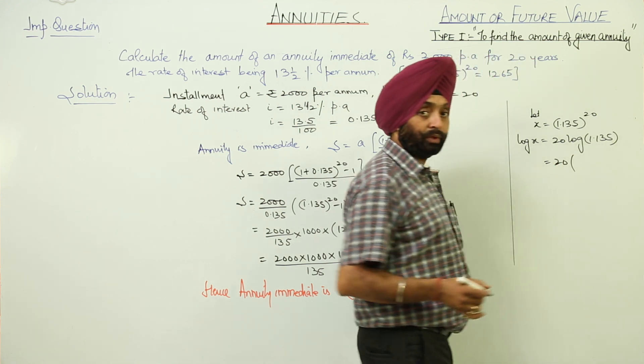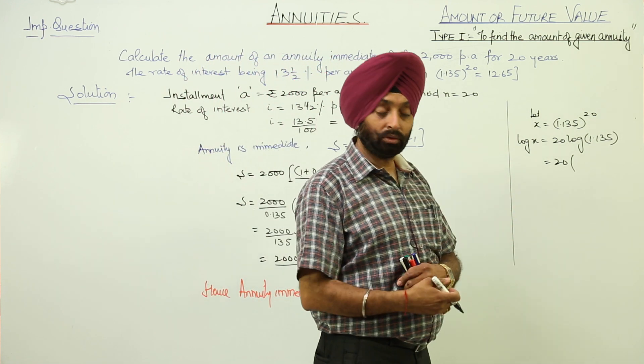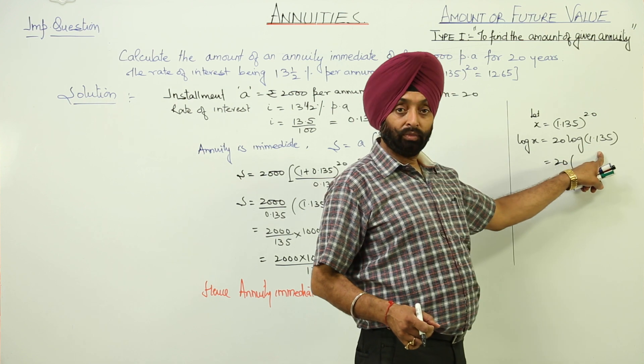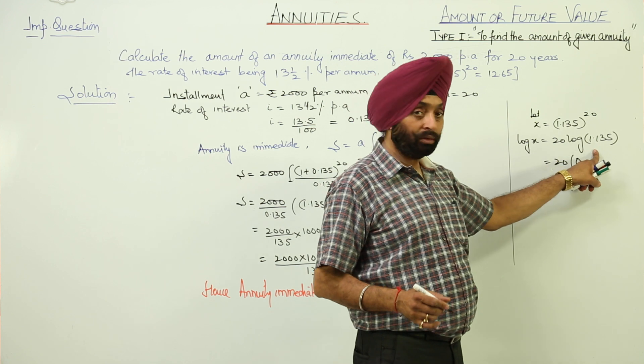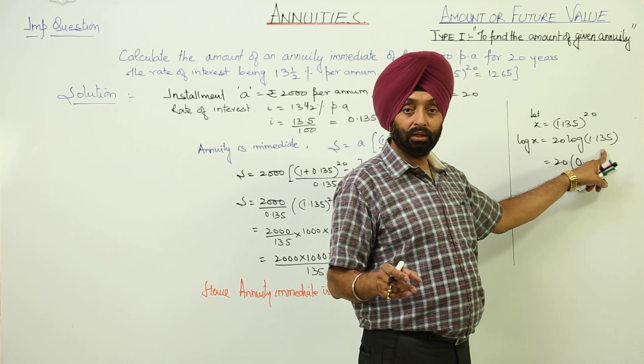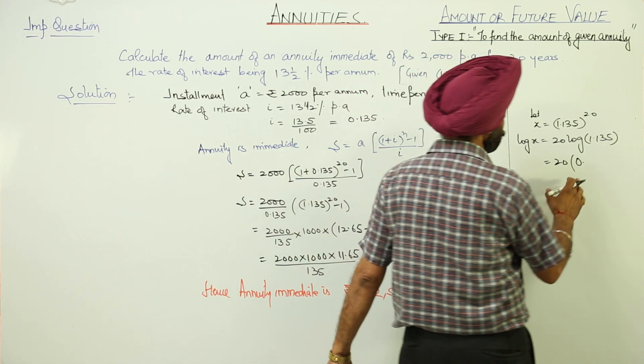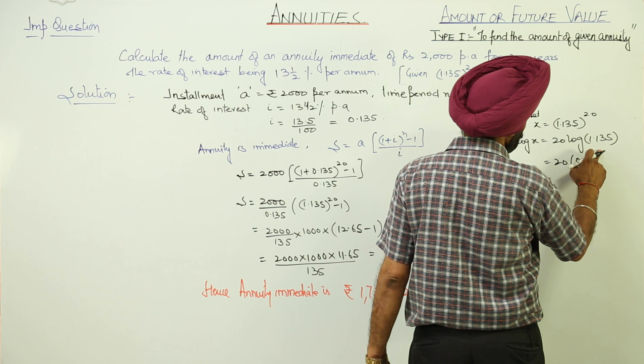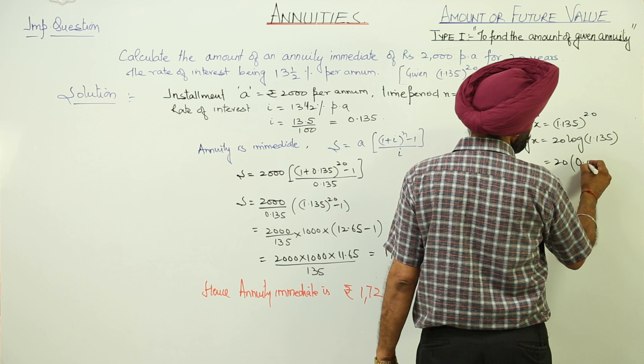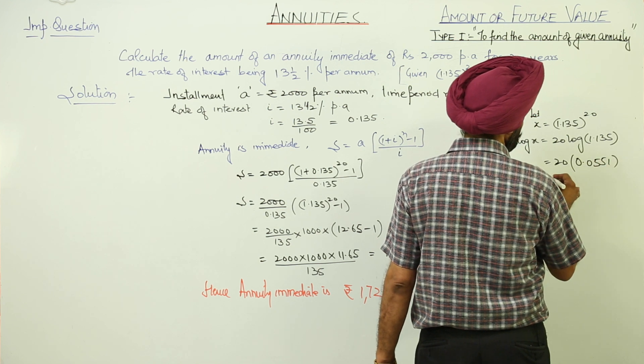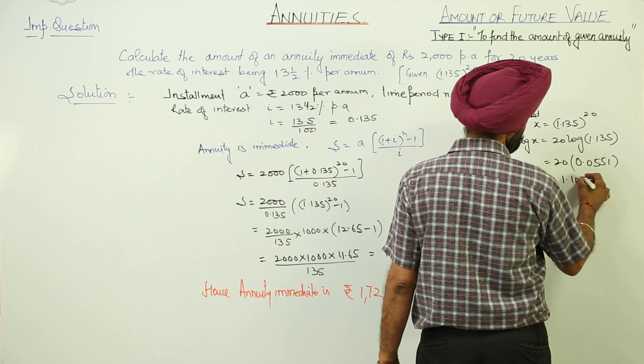Characteristic and mantissa. The characteristic we are having is 0. We have to check for 11 first column, at 3 second column, and at 5 the last one. After checking this on the log table, we will be getting 20 times 0.0551, and this is equal to 1.102.